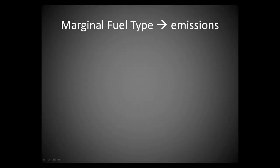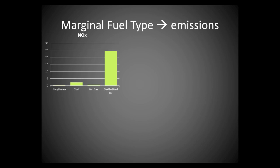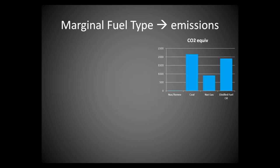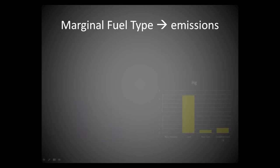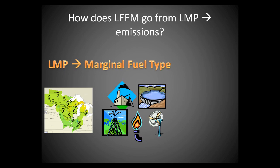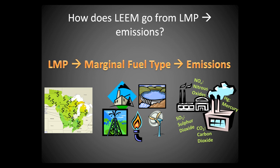Different types of fuel each have their own characteristic profiles of associated pollutants. So, once we know the marginal fuel type, we can estimate air emissions. In review: locational marginal prices can be related to the marginal generation costs, which helps us estimate the marginal fuel type. Then, knowing average emission rates for each fuel type, we can estimate emissions of different pollutants.